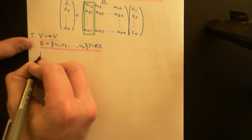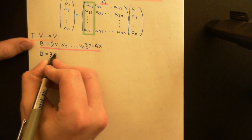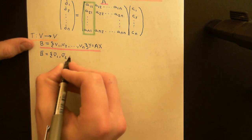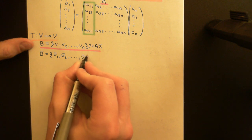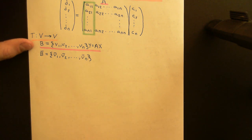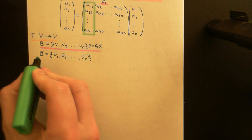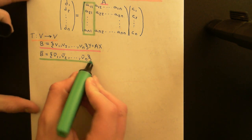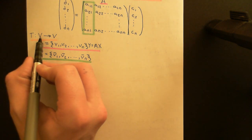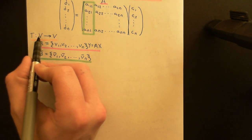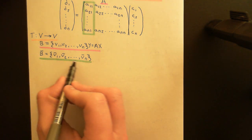Now what we're going to do is come up with some new basis B-bar, which is going to have a whole bunch of new basis vectors: V1-bar, V2-bar, all the way up to Vn-bar. It will have the same number n, since n is just the dimension of our finite dimensional vector space V. We're going to express all vectors in both the domain and codomain vector space as coordinate vectors with respect to this basis B-bar.